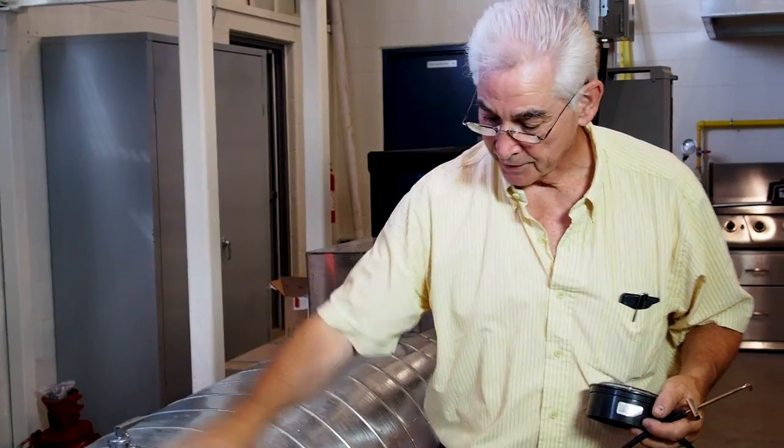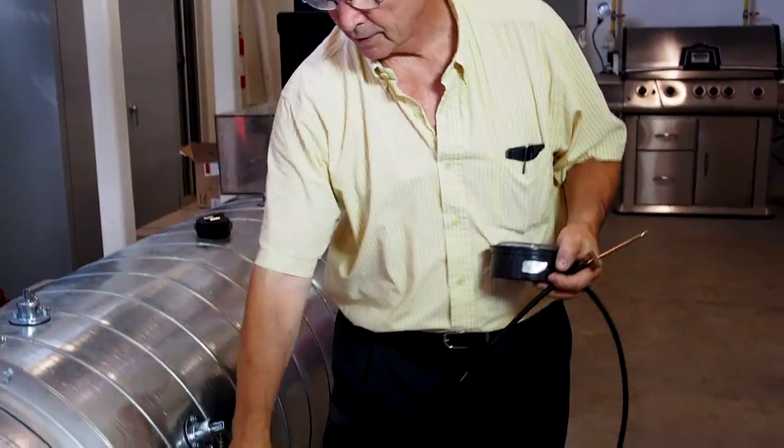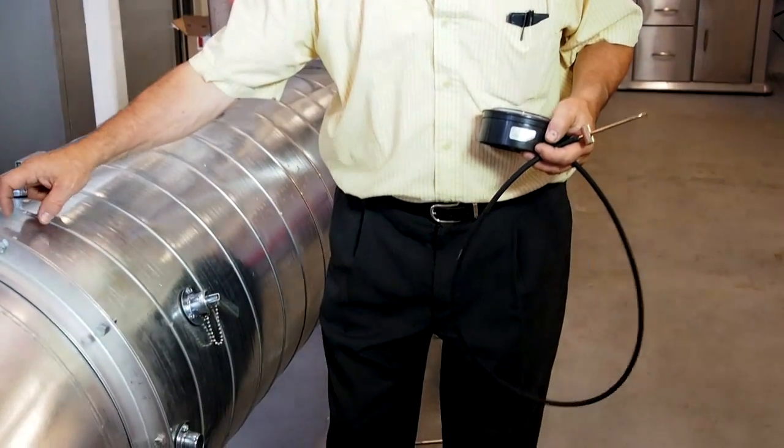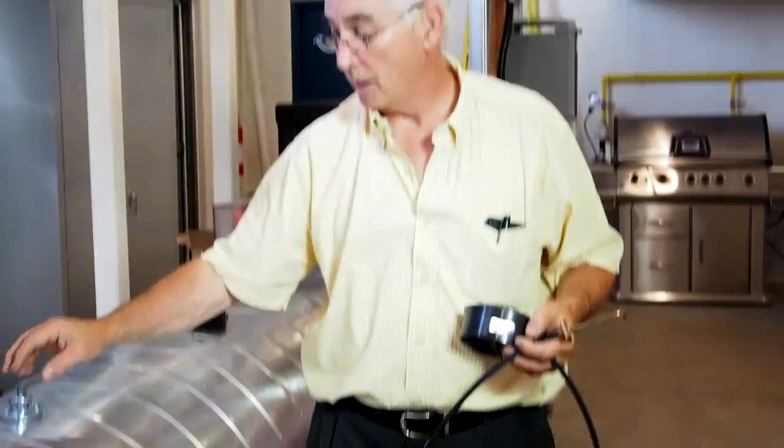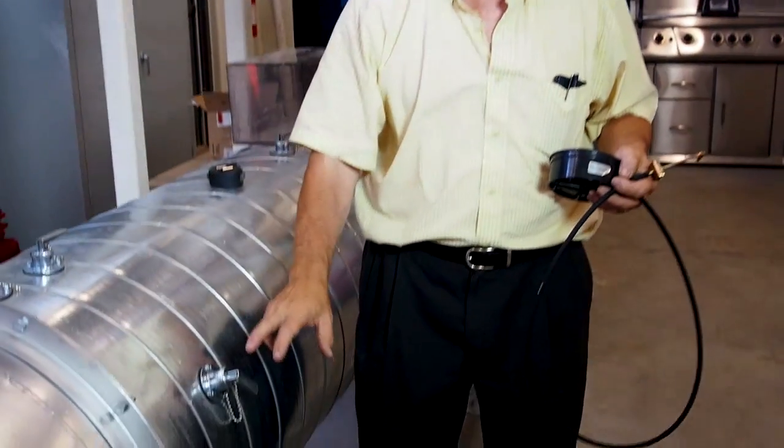On smaller ducts, we would take readings on two diameters 90 degrees apart. On larger ducts, we would take three readings 60 degrees apart.